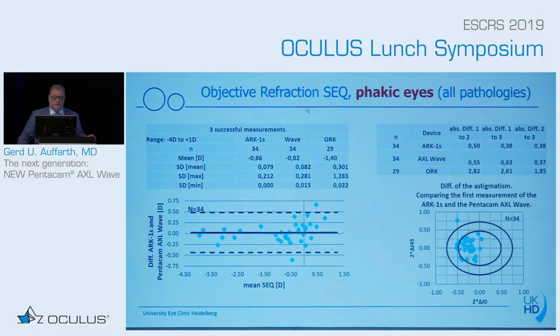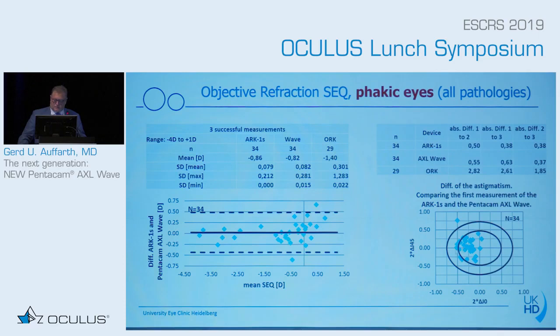When we look at the objective refraction — the spherical equivalent of the phakic eyes, including all patients — we have more or less identical values between the NIDEK and the Pentacam device, with a mean value of around 0.8 to 0.9 diopters. The Schwind device showed something quite different. Looking at astigmatism, all devices remained within 0.5 diopters of difference, with good repeatability.